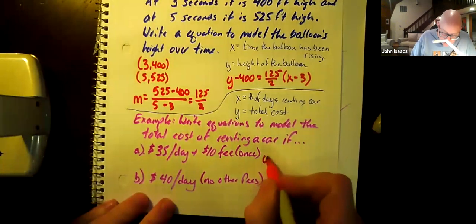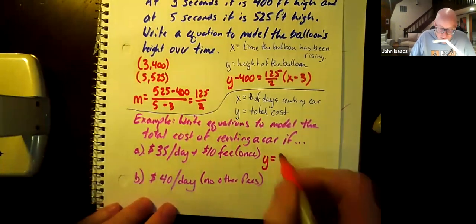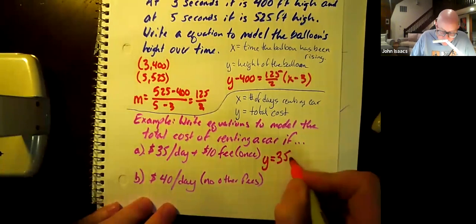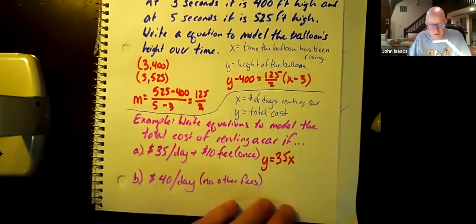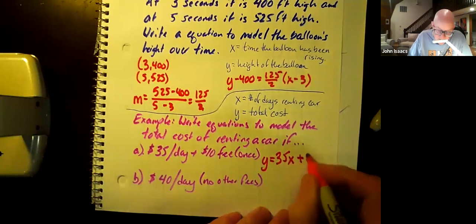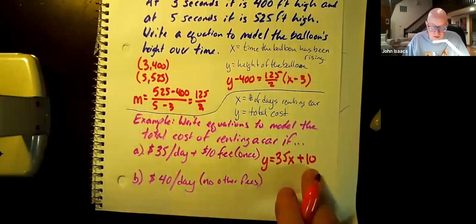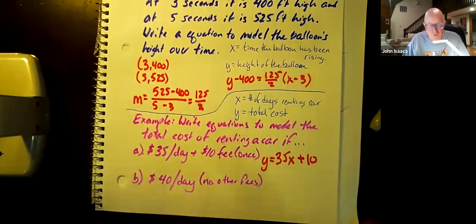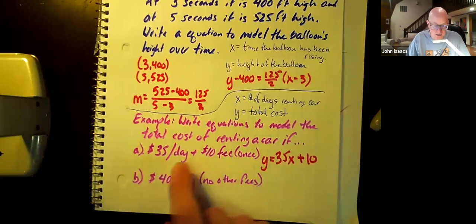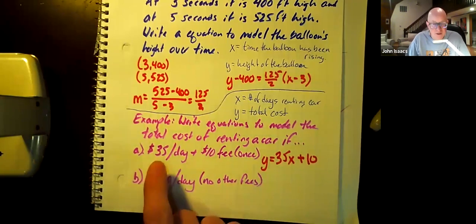So the total cost is a reflection, if you will, of the number of days you rent. You need to know the number of days you're renting in order to figure out the total cost. So the number of days renting has to be your independent variable and your total cost is the result of that. So let's see. Our total cost, you would figure, by multiplying 35 times the number of days rented. And then adding the fee of $10 to it.